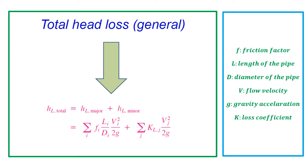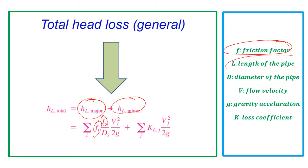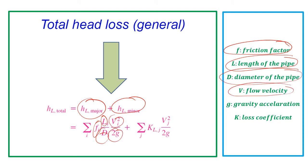So the total head losses is the sum of major losses and minor losses. Major losses can be found by the equation where F is the friction factor, L is the length of the pipe, D is the diameter of the pipe, V is the flow velocity in the pipe, and 2G is twice the gravitational acceleration. For minor losses, we have KL which is the loss coefficient, V is the flow velocity, and 2G is twice the gravitational acceleration.